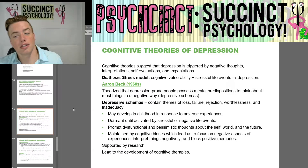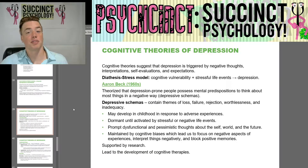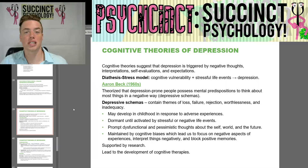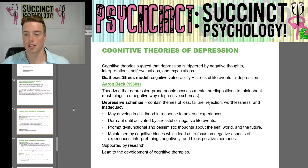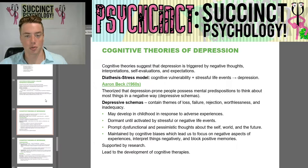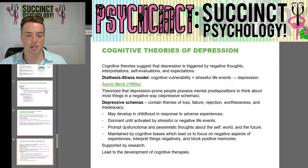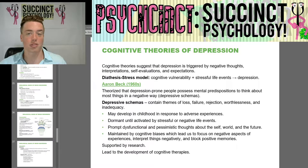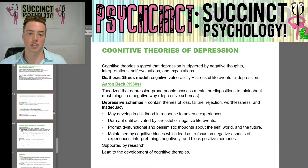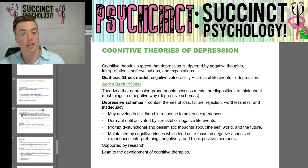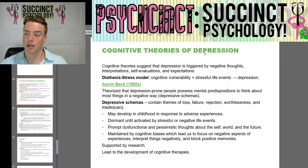Hey everybody, welcome back. This is the final part in Chapter 15, Psychological Disorders, from the OpenStax Online Psychology 2e textbook. My name is Prescott. I'm here at PsychSynced, Succinct Psychology. Last time we talked about the basis of mood disorders, biological basis, bipolar disorder, persistent anxiety disorder, and we left off on the cognitive theories of depression, so we'll just keep on going.